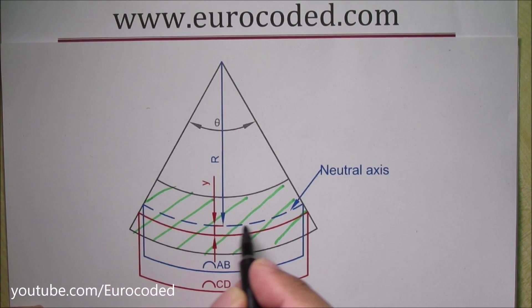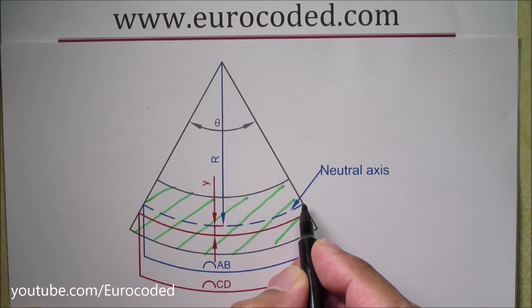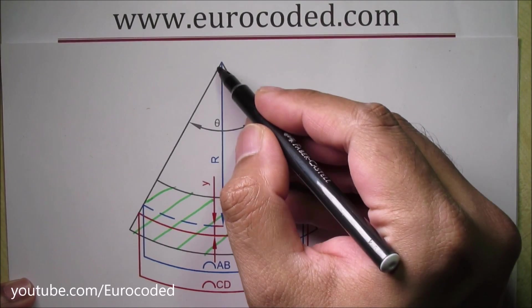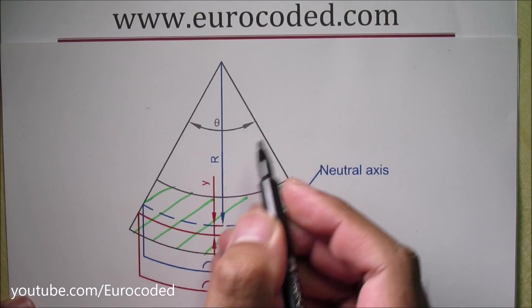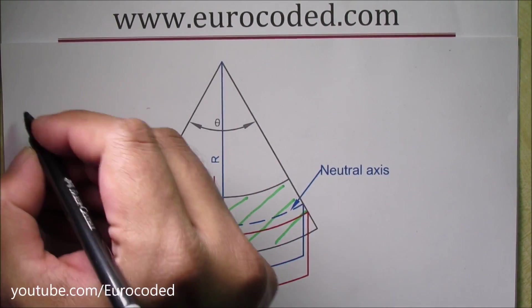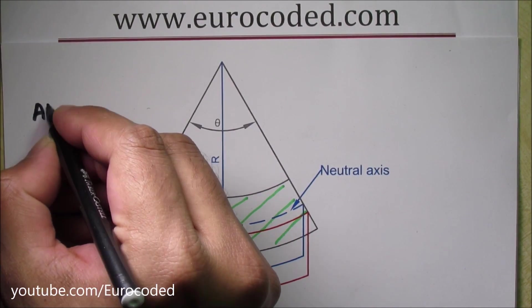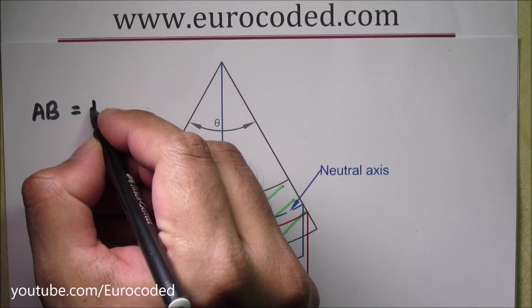So the distance from this point to this point is AB, and the radius of that curve is R, and this is theta. Therefore we can write AB is equal to R theta.